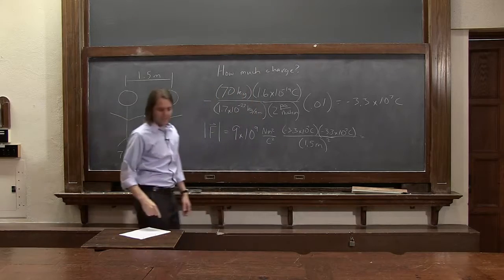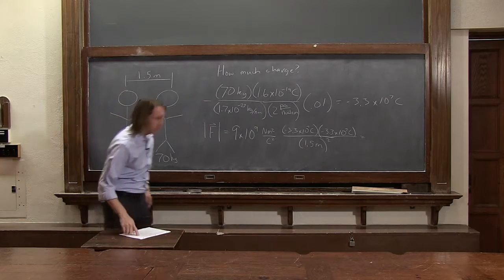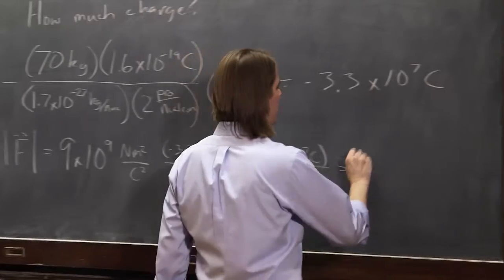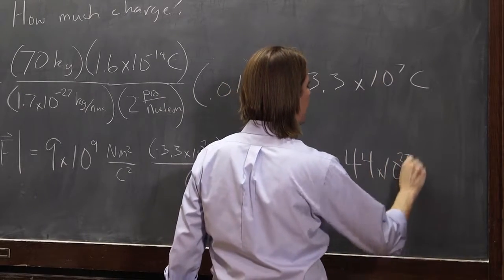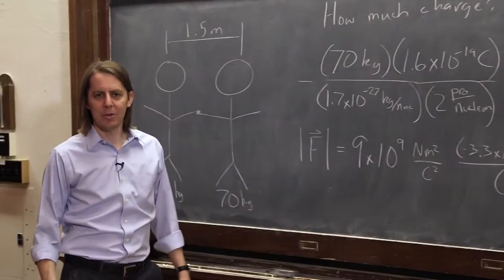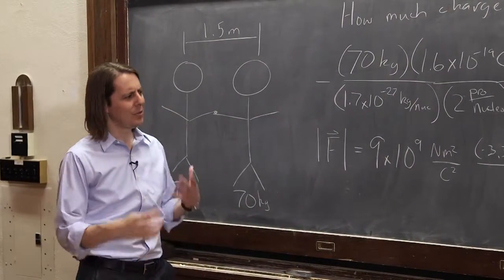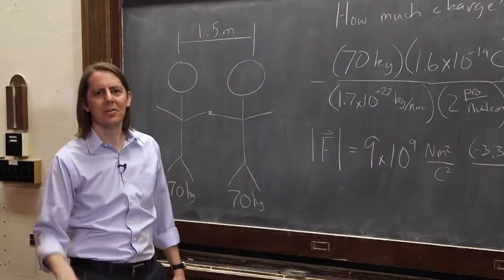So you do all that and you get 44 times 10 to the 23rd newtons. So Feynman has made his point. That is a pretty big force. So if you just had 1% extra electrons, you couldn't go near anybody because you'd have such a big force.